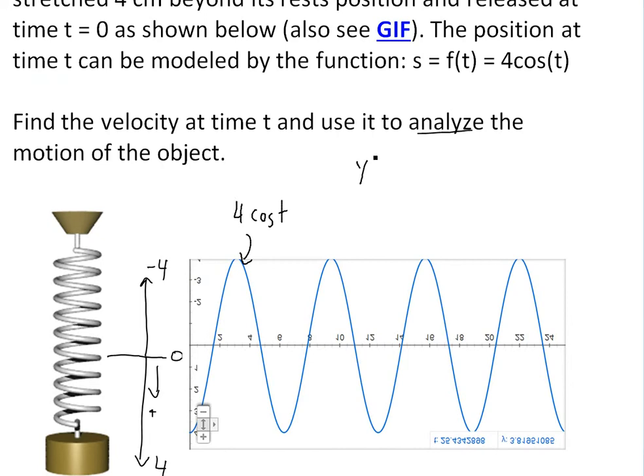The derivative, y' or s' or f'(t), we just apply the derivative. The derivative of cosine t is negative sine t, right here. You can see my video below on proof for the derivative of cosine.